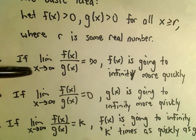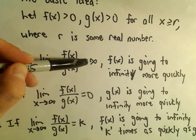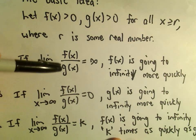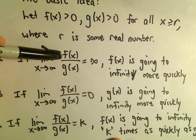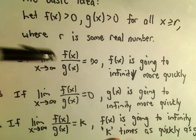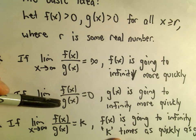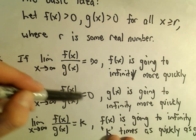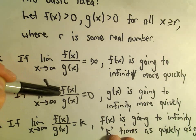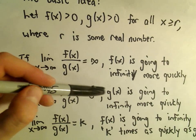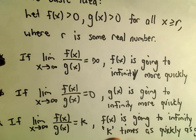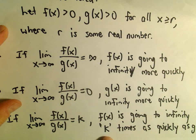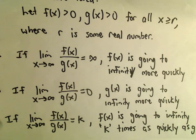In this case, if the limit as x goes to infinity of f(x) over g(x) is infinity, it says the number on top must be bigger than the number on the bottom, which means f(x) is getting bigger faster than the function in the denominator. If the limit as x goes to infinity of f(x) over g(x) is zero, the number in the bottom must be much bigger compared to the number on top — that implies g(x) is going to infinity more quickly. If the limit is a constant, then f(x) is going to infinity k times as quickly as g(x).